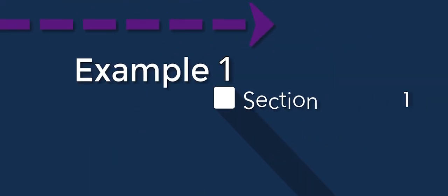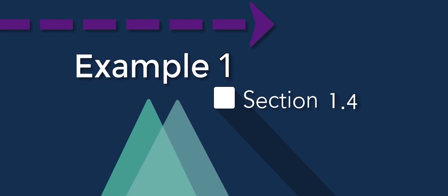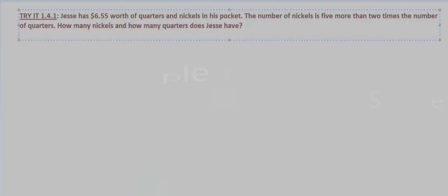In this problem, we're told that Jesse has $6.55 worth of quarters and nickels in his pocket. The number of nickels is five more than two times the number of quarters. We're asked how many nickels and how many quarters does Jesse have?